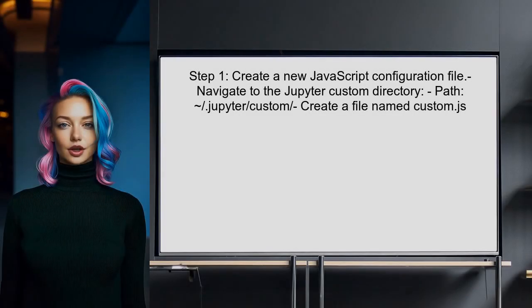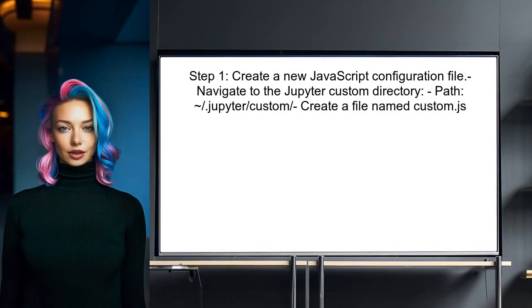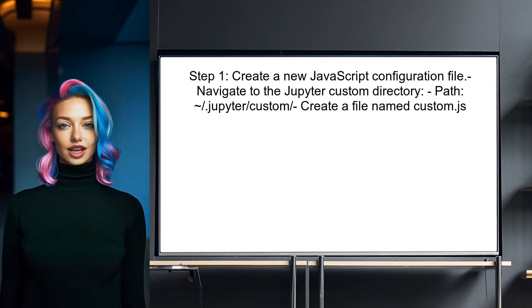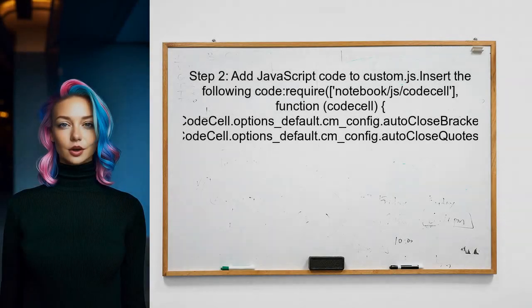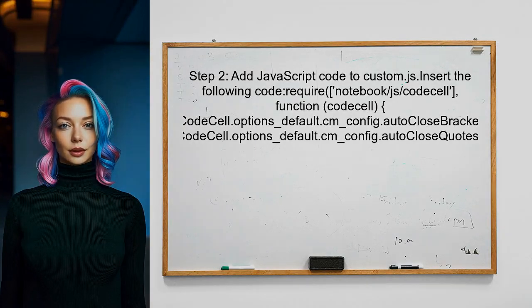To disable auto quotes and auto brackets in Jupyter 5.0, first create a new JavaScript configuration file. This file will override the default settings. Next, add specific JavaScript code to this file — this code will disable the auto-closing feature for brackets and quotes.